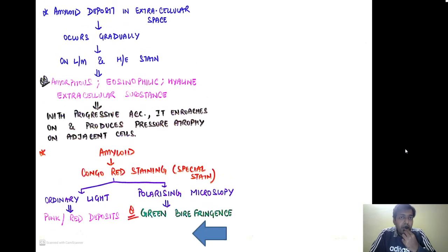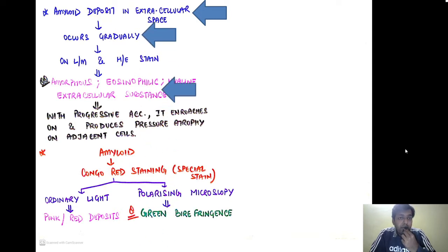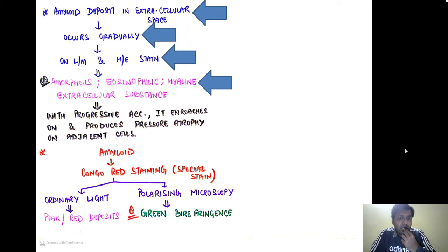Amyloid deposition always occurs in the extracellular space, and the process is quite gradual. On light microscopy with H&E staining, you will find amorphous eosinophilic hyaline extracellular substance. With progressive accumulation, it encroaches on and produces pressure atrophy on adjacent cells — this is how amyloid causes damage.